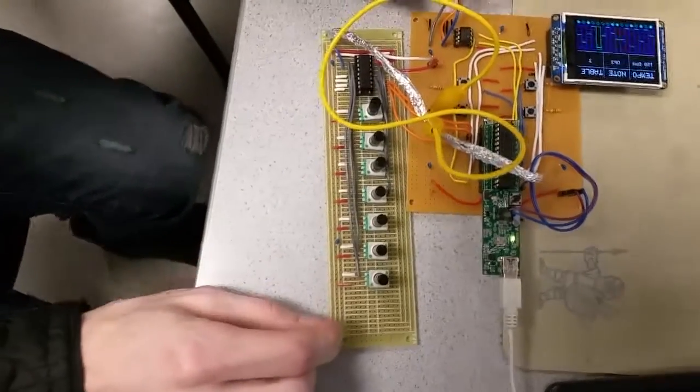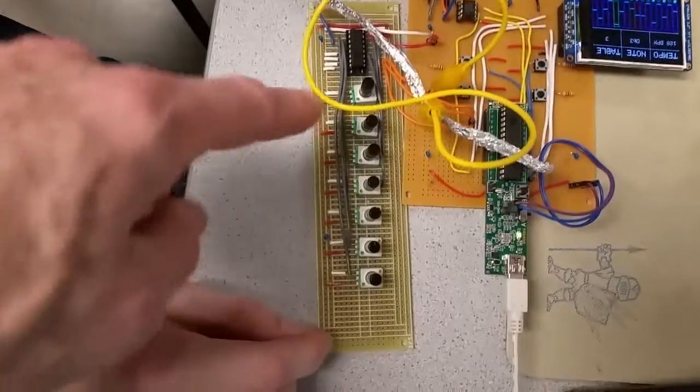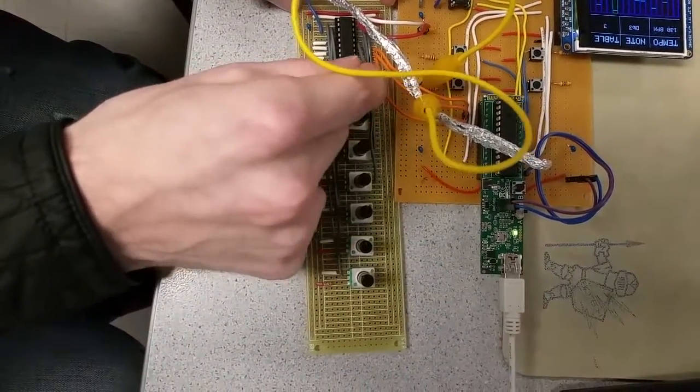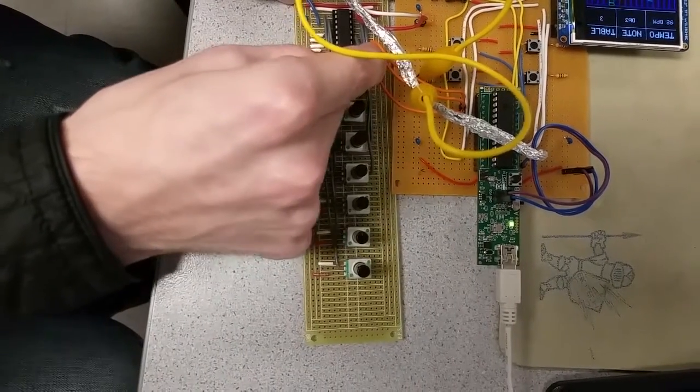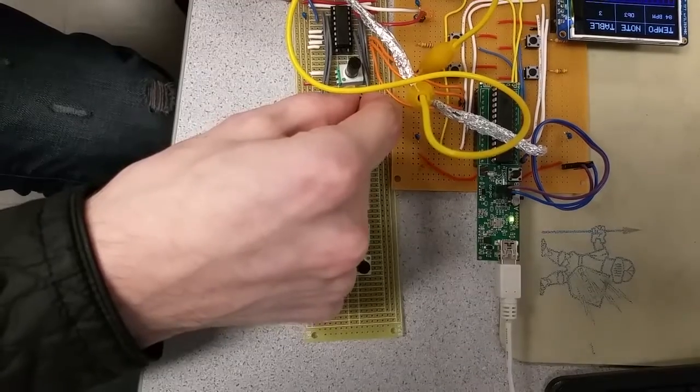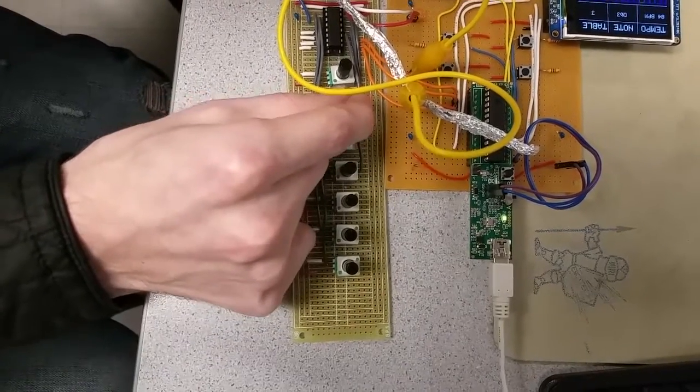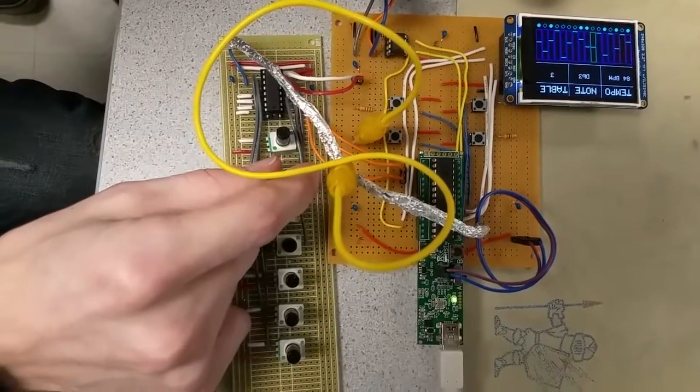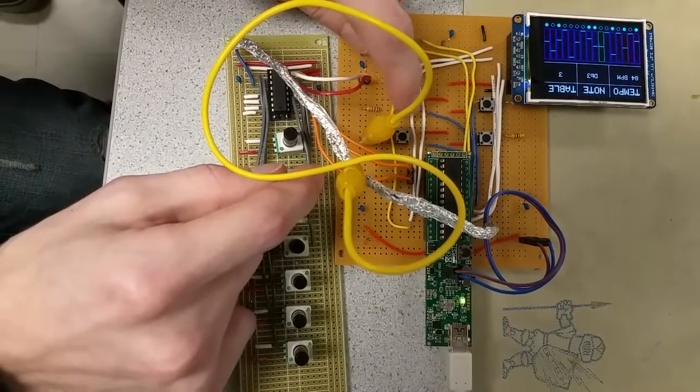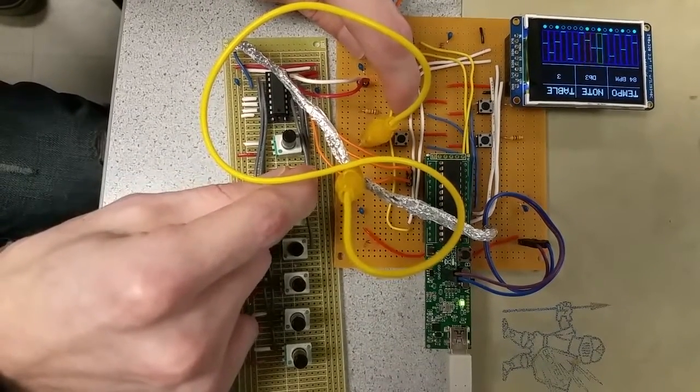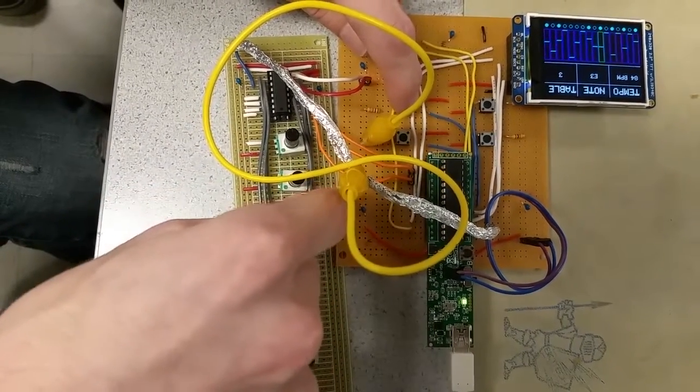And what are the trim pots, the potentiometers, do? So we've got one to control tempo of the sequence. We've got one to control the note that you're editing with the green indicator. Got it. We can add a rest or take a rest away. The third knob changes the note.